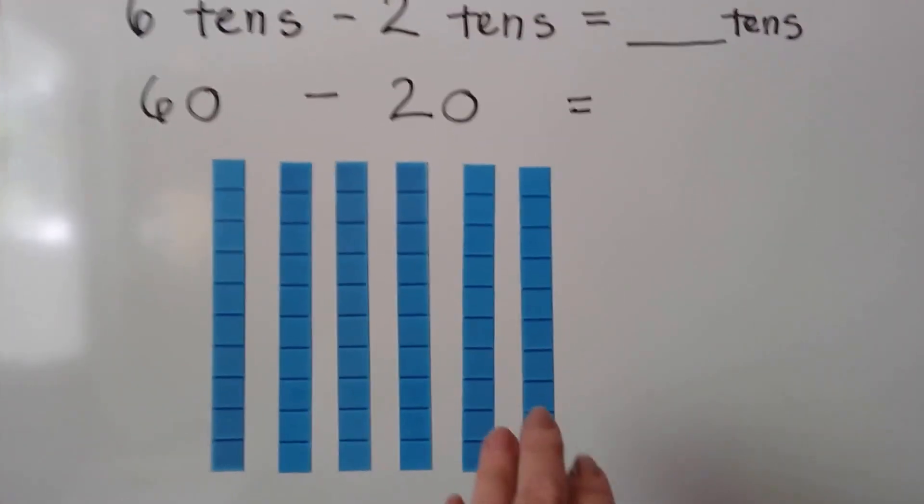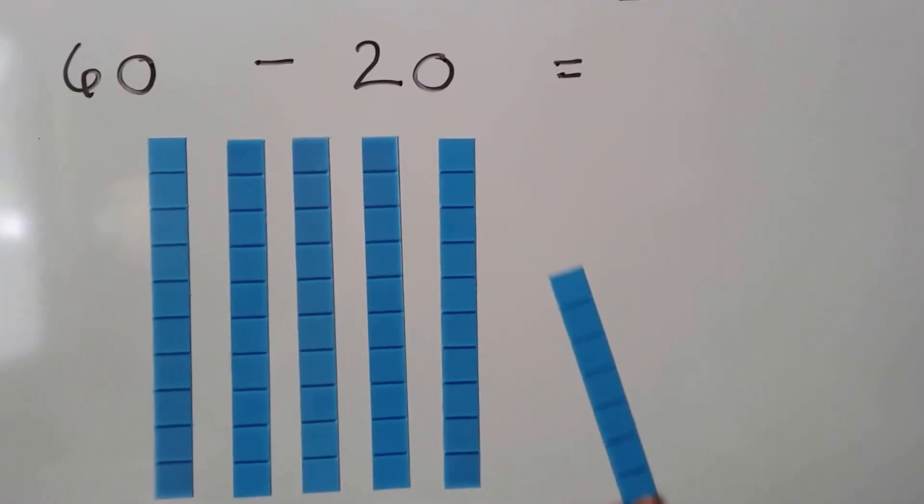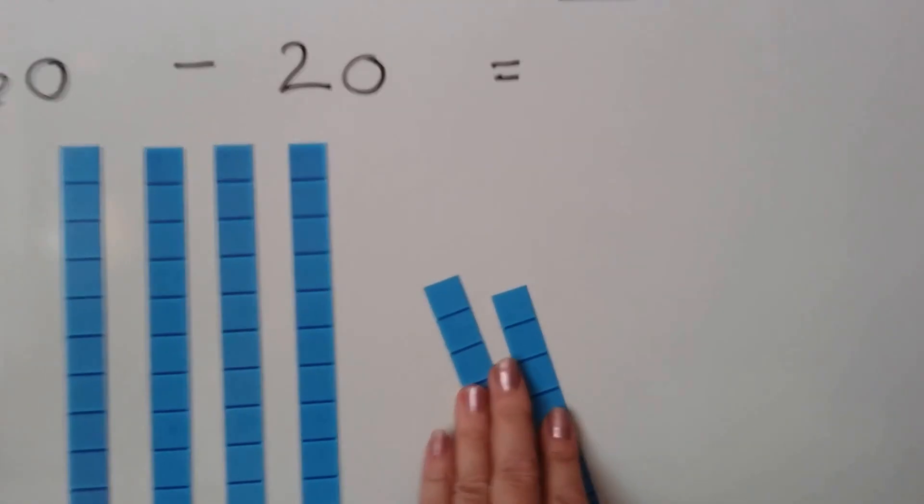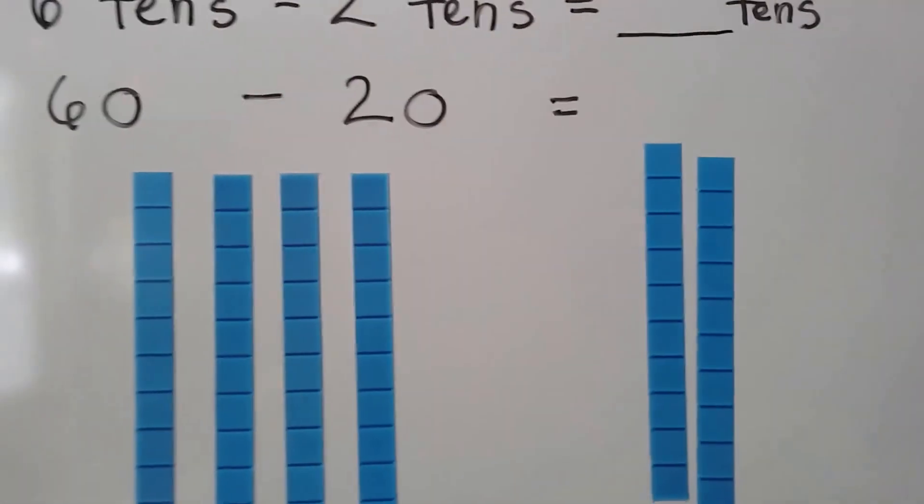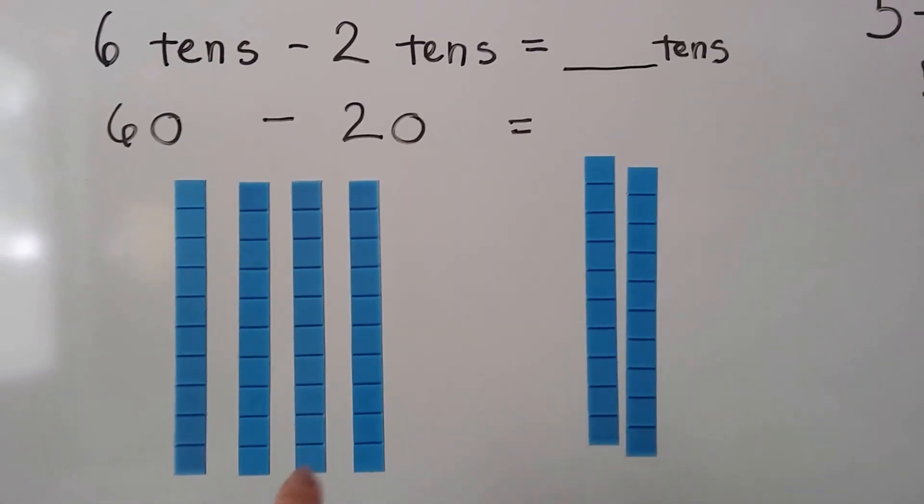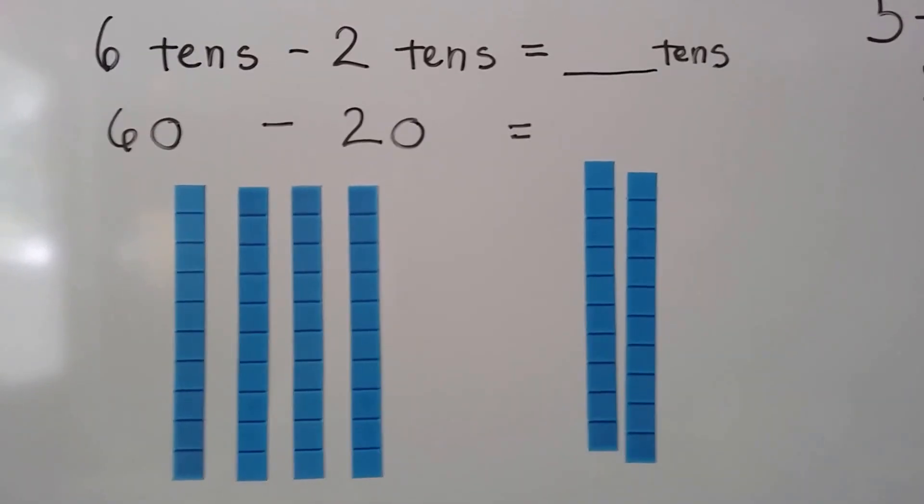If we take two of these away, one, two. How many tens do we have left? One, two, three, four tens.